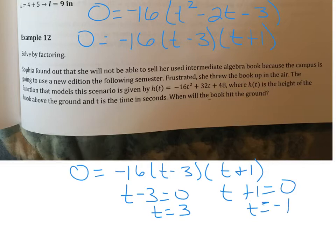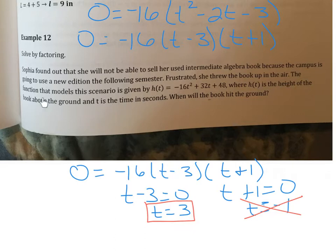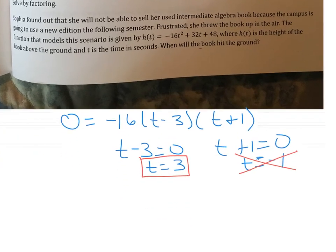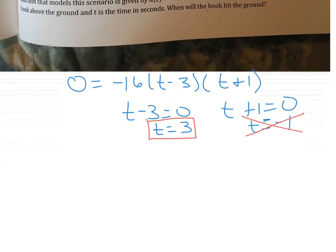Since t stands for time, and in a word problem time cannot be negative, we reject the negative solution. Time equals 3 seconds. The book will hit the ground in 3 seconds.